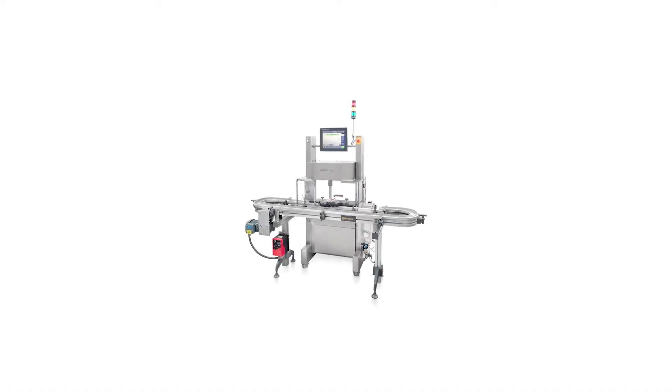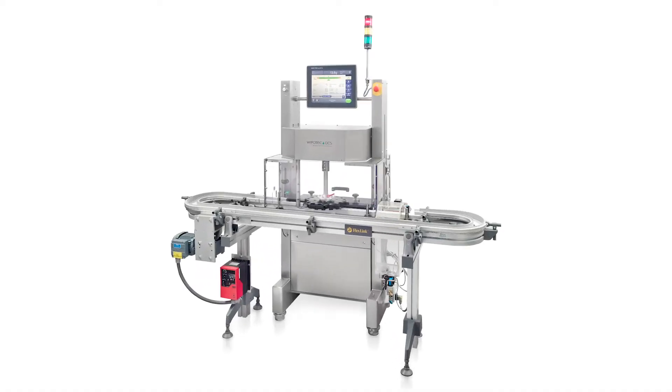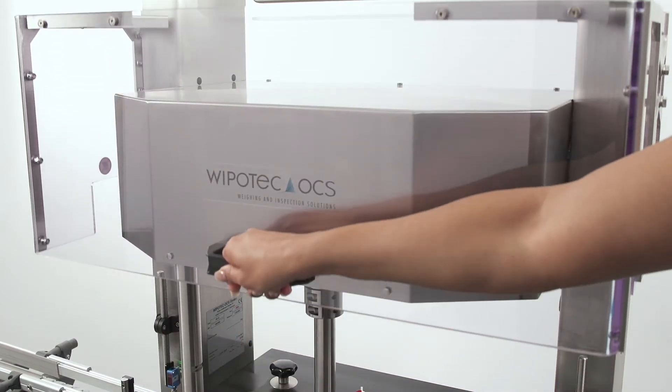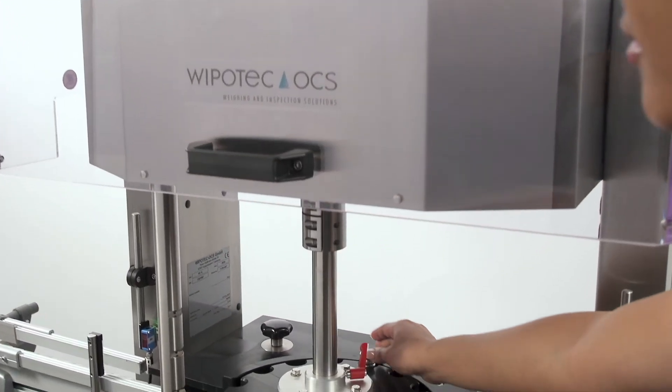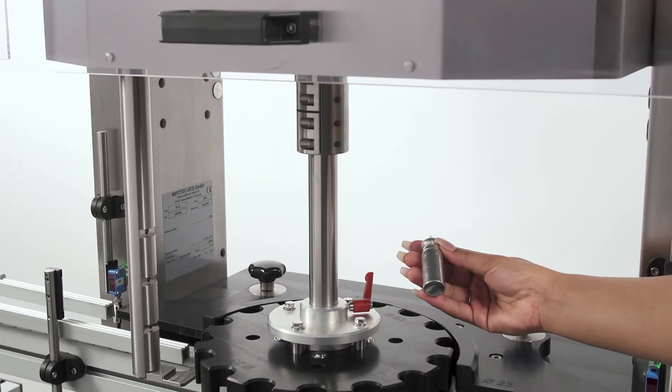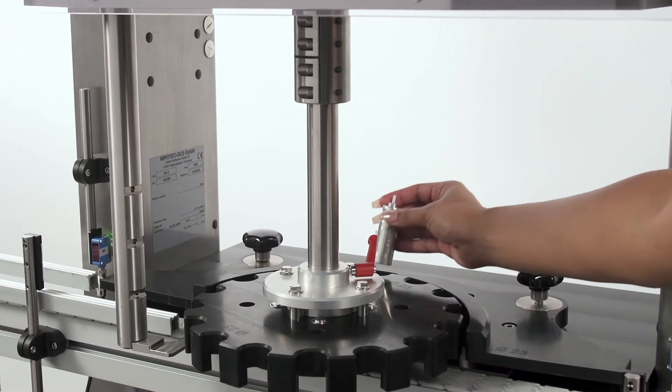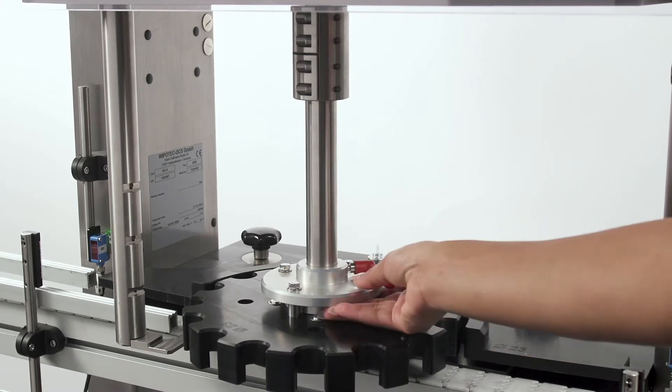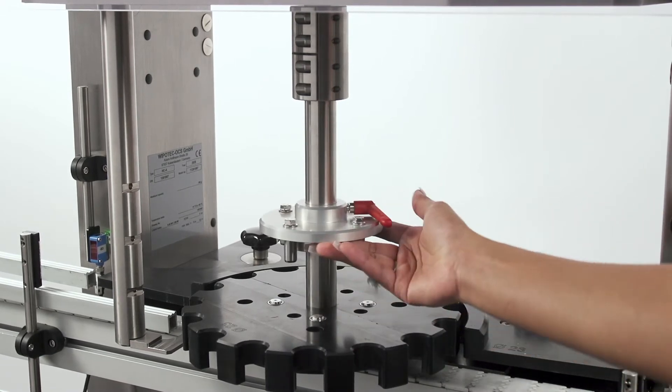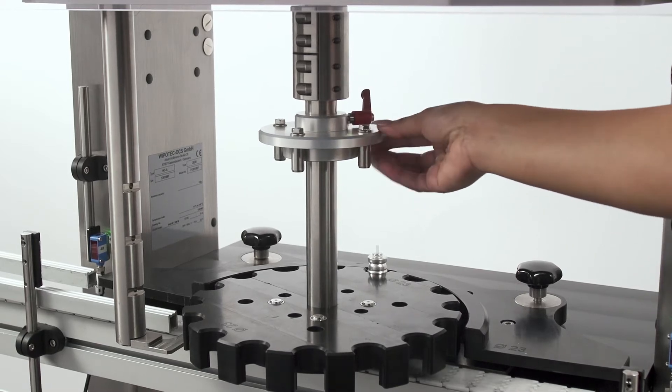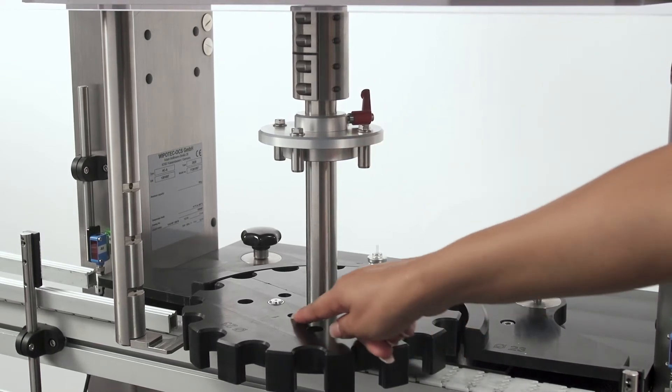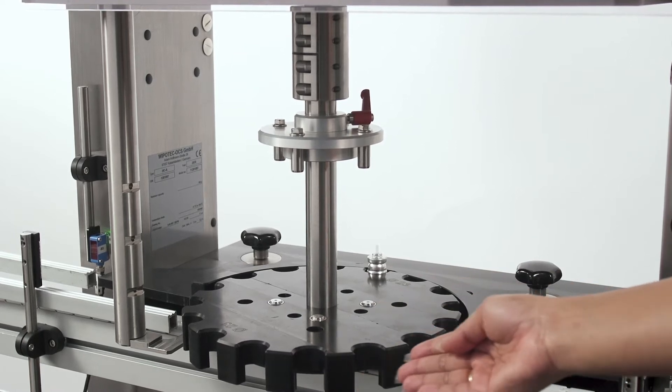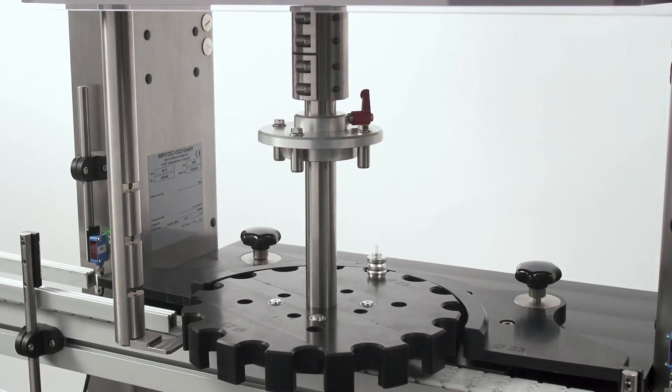Let's take a closer look at the machine's features and configuration options. This machine version is a single position HCAIS checkweigher and it utilizes one EMFR weigh cell. The weigh cell is located under the star wheel and in the back of the machine at the 12 o'clock star wheel position. The lever you see above the star wheel enables a tool-less removal of the star wheel. It is important to make it easy to change the star wheel because this allows the customer to quickly change the production line over to run new products with a different diameter through the checkweigher.